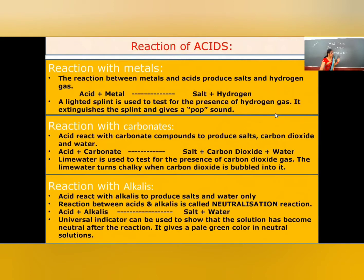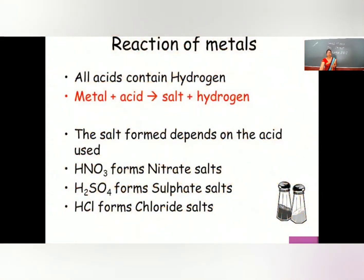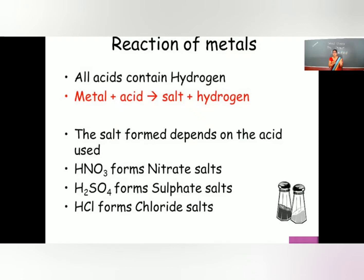In this session we will discuss two or three chemical properties of acids. Number one: reaction of metal with acid. Any metal when it reacts with acid will form two main products — salt and hydrogen gas. The salt formed is the respective metal's salt. For example, if the metal is sodium and the acid is sulfuric acid, we get sodium sulfate, plus hydrogen gas H₂. Hydrogen gas is the main important product in this reaction.